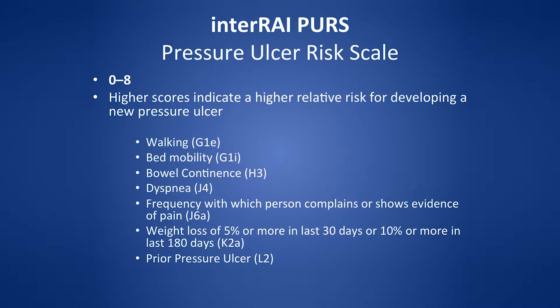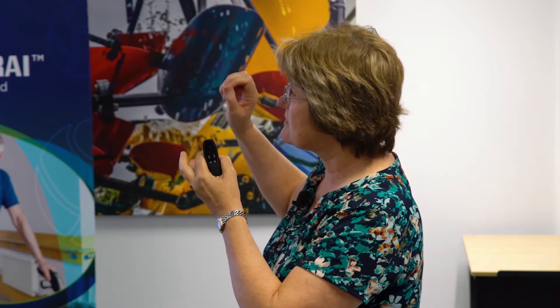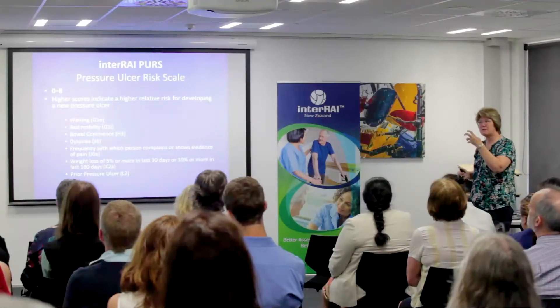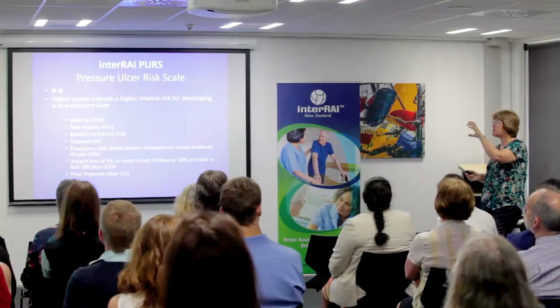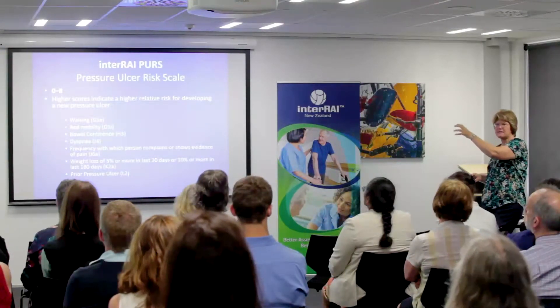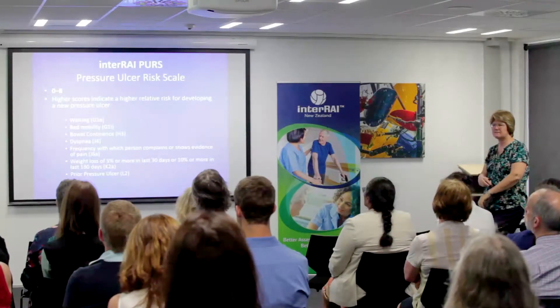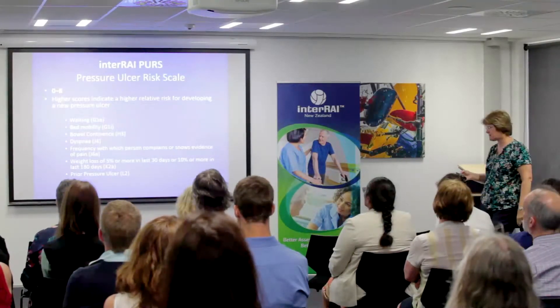If they've had a prior pressure ulcer, it's again a zero to eight scale. The question I have for those doing this work in residential care is: how can we get people to use the pressure ulcer risk scale just as well as we use other scales? It's already there — could this subscale pop up somewhere so we could look at it on a regular basis?